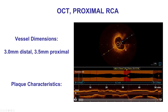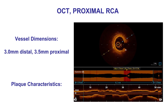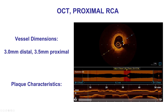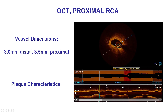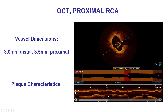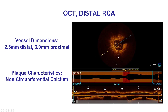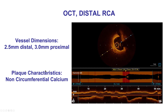The next step was to perform imaging to size our vessel and determine the need for atherectomy. Patients who have had coronary bypass surgery often have significant calcification. What was found were areas of calcification, but no circumferential calcification throughout the vessel, so we decided not to perform atherectomy prophylactically. The same was found distally — calcification was present but not circumferential.